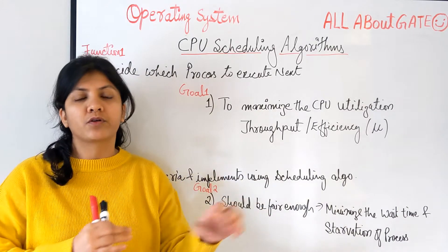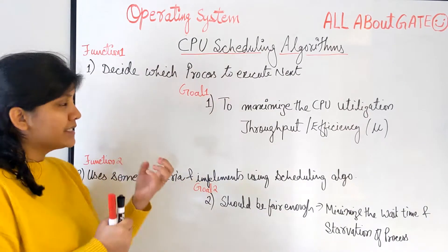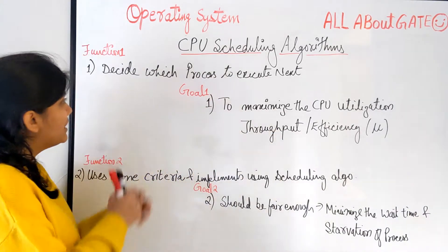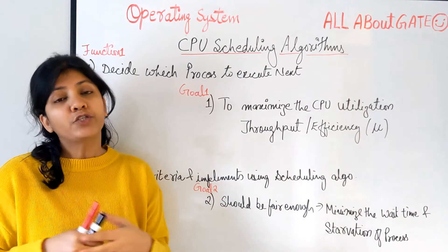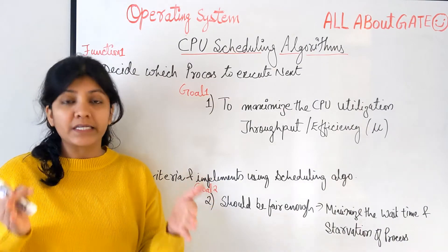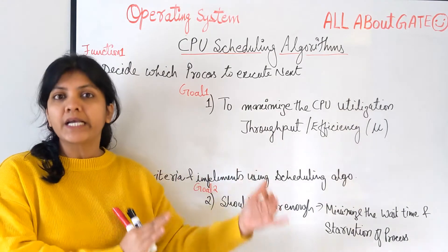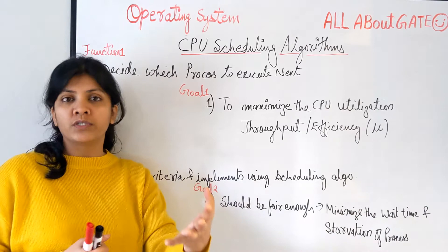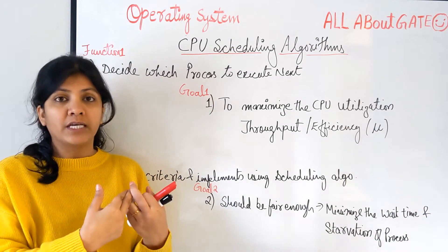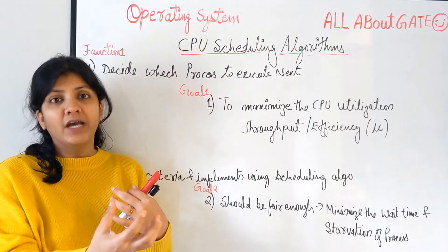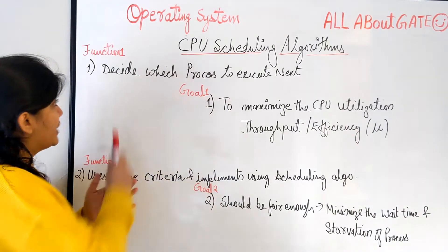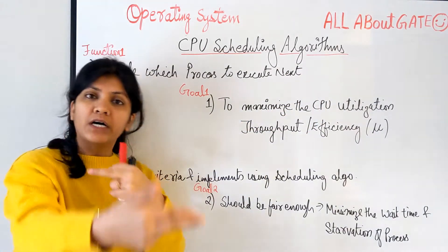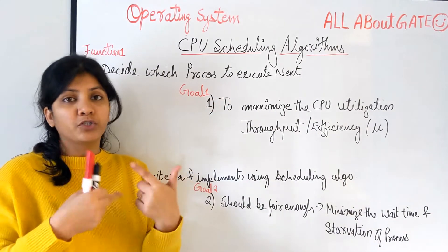Why can't we simply take a process and put it on the CPU? Let's understand the reasons and functions of CPU scheduling algorithms. We have multiple processes in the ready queue and usually a single processor on which they want to get execution one by one. Resources are less and the processes that want to use them are more, so we need to allocate the resource in a way that maximizes utilization. The algorithm decides which process to execute next — which one should move from the ready queue to the running state.